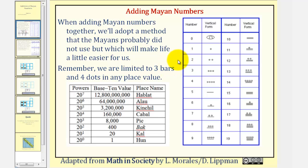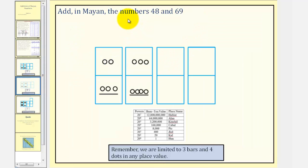Let's take a look at our examples. Here we want to find the sum of 48 and 69 using Mayan numbers. Notice how this is 48 because we have two 20s and eight ones. This is 69 because here we have three 20s and nine ones.